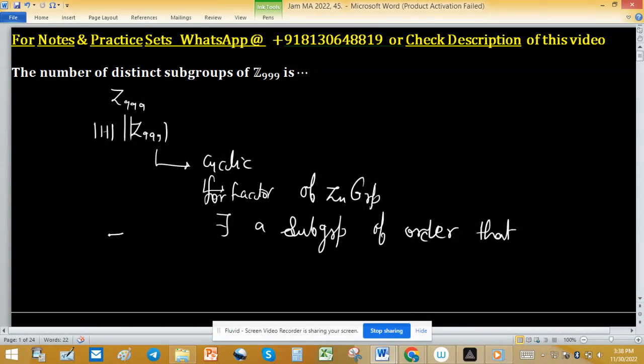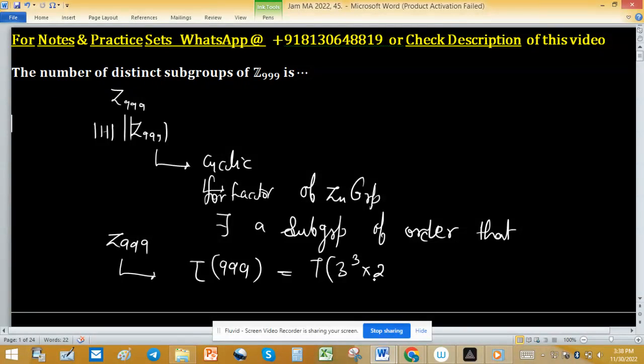To find the factors of Z₉₉₉, the tau function will help us. We need to find the value of τ(999), which equals τ(3³ × 37).